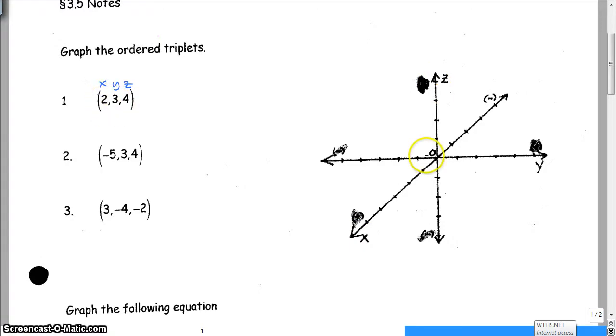So to graph (2, 3, 4), what you do is you bounce out 2 along the X-axis, and then Y is left and right, so 3 is 3 to the right because it's positive. And then finally 4 for Z goes up 4, because that's where Z is positive. And we have a coordinate right there, and we're good to go.